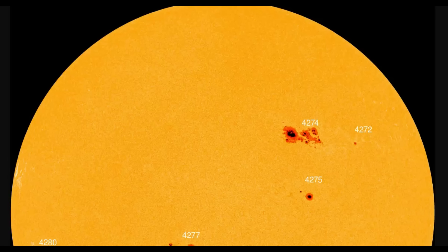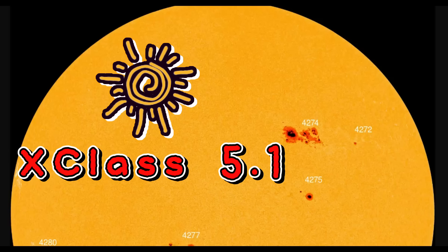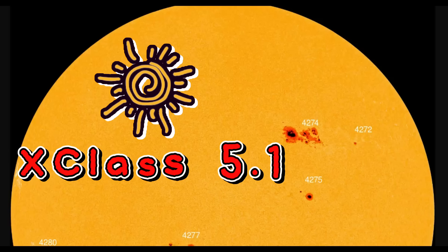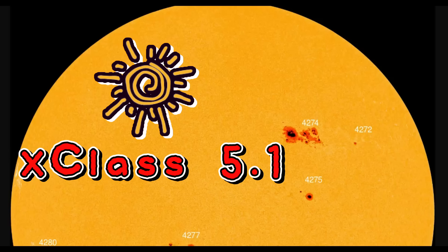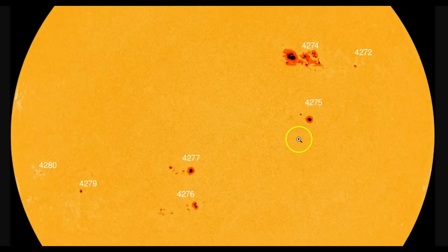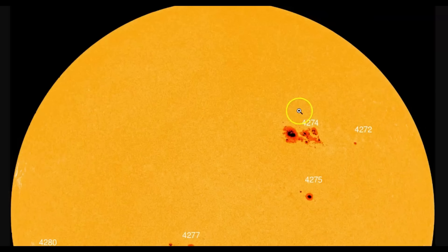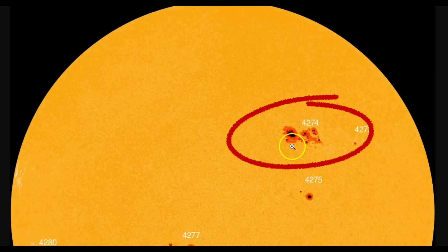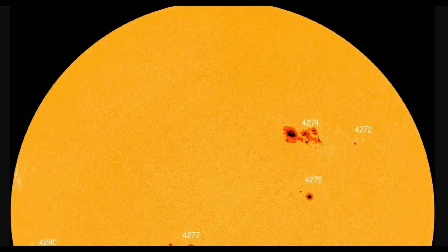More about the sun: it erupted with an X5.1 class solar flare today, the most powerful of this year, the strongest since the X9 event in October of last year. This flare originated from a highly active sunspot area AR 4274, which has produced a string of X-class events this week, highlighting the peak of the intensity of solar cycle 25.